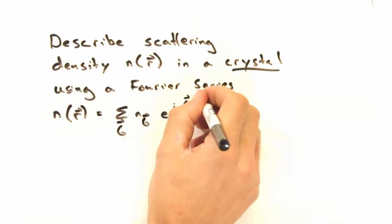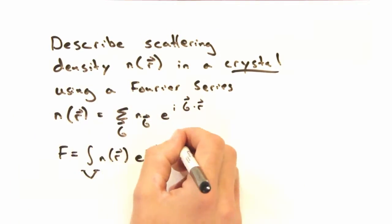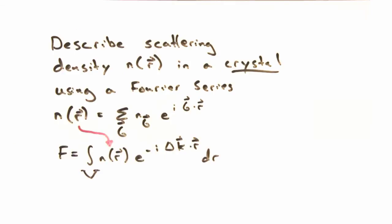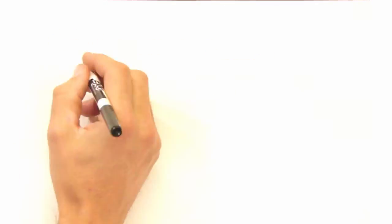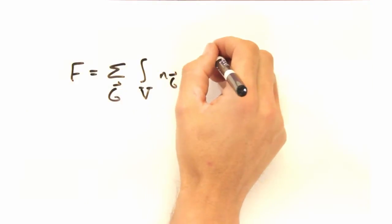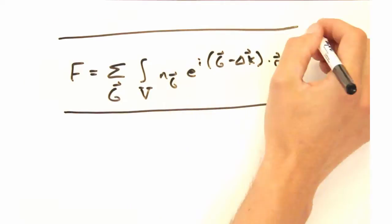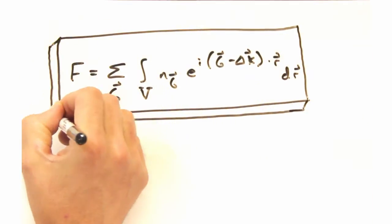I'm betting that makes the math much cleaner. Right. So let's go ahead and insert the periodic scattering density we already derived into our equation for the amplitude of the diffracted beam at the detector. An important thing to notice is that we have combined the complex exponentials into one term.